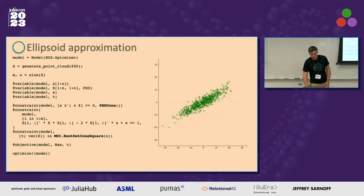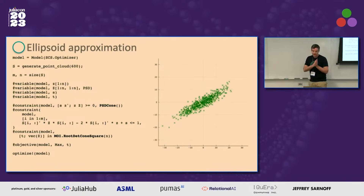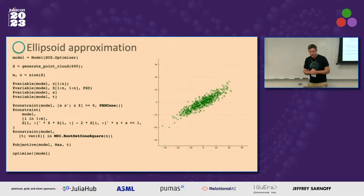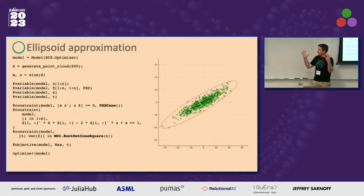Another fun one is ellipsoid approximation. If you have point clouds, we're asking to summarize the geometry of the point cloud — can we make a best ellipsoid fit rather than a linear fit? We turn this into a semi-definite programming problem, using the PSD cone (positive semi-definite cone) in JuMP. We can access more obscure sets as well, like the root-det cone square set, to easily express this problem. It generates a solution showing a very tight ellipsoid fit around the data.